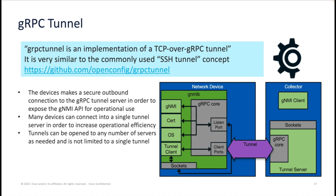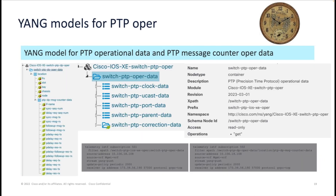On the programmability front, 17.11.1 brings support for gRPC dial-out tunnel, where devices make a secure outbound connection to the gRPC tunnel server in order to expose the GNMI API for operational use. Many devices can connect into a single tunnel server to increase operational efficiency. Additionally, zero-touch provisioning is now available. Another feature introduced is YANG models for PTP operation as listed on this slide.